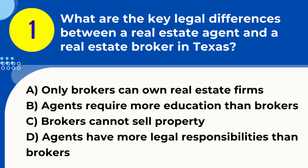Question 1. What are the key legal differences between a real estate agent and a real estate broker in Texas? A. Only brokers can own real estate firms. B. Agents require more education than brokers. C. Brokers cannot sell property. D. Agents have more legal responsibilities than brokers. Answer: A. Only brokers can own real estate firms. Explanation: In Texas, the key legal difference is that only real estate brokers can own and manage real estate firms, while agents must work under brokers.